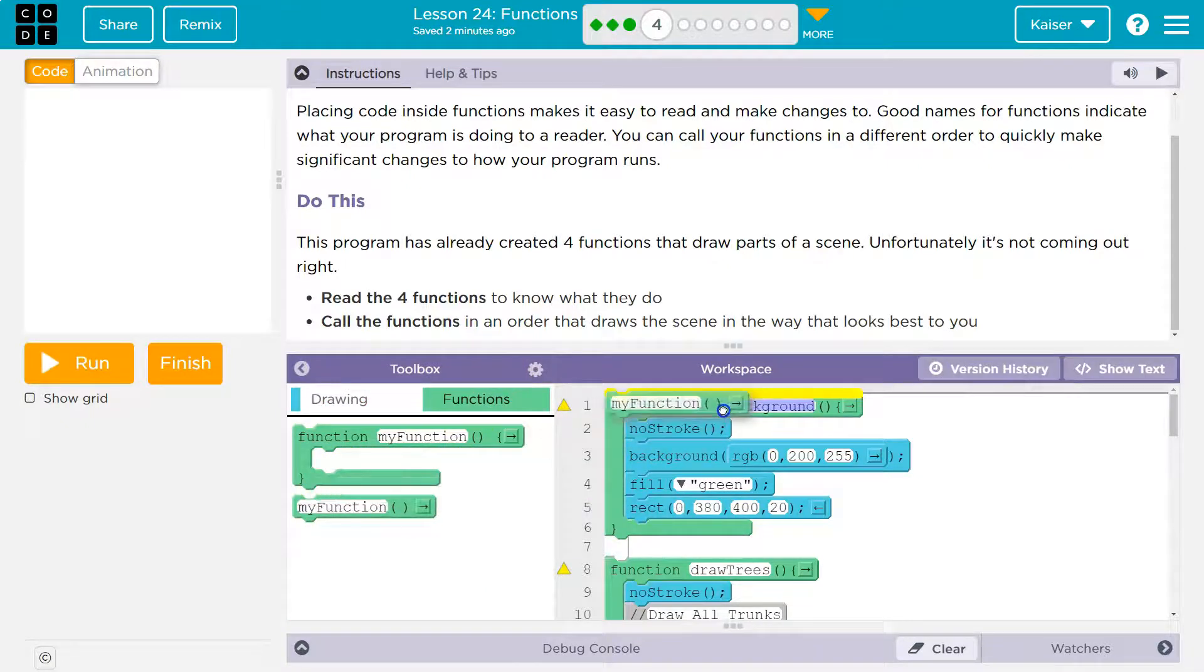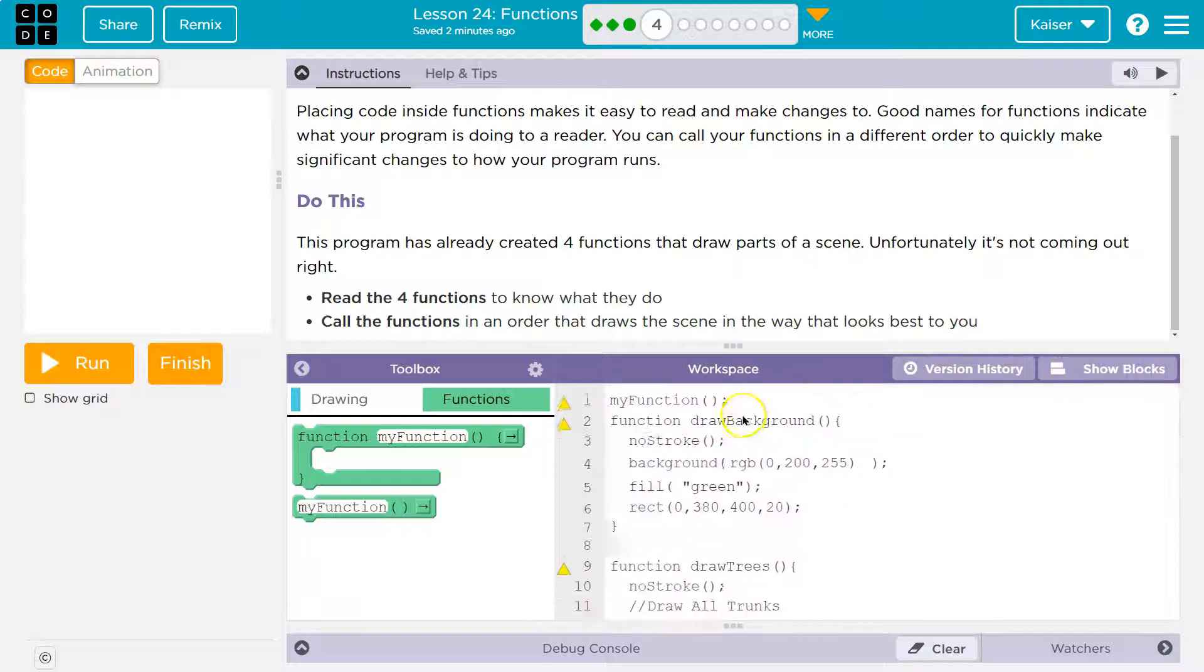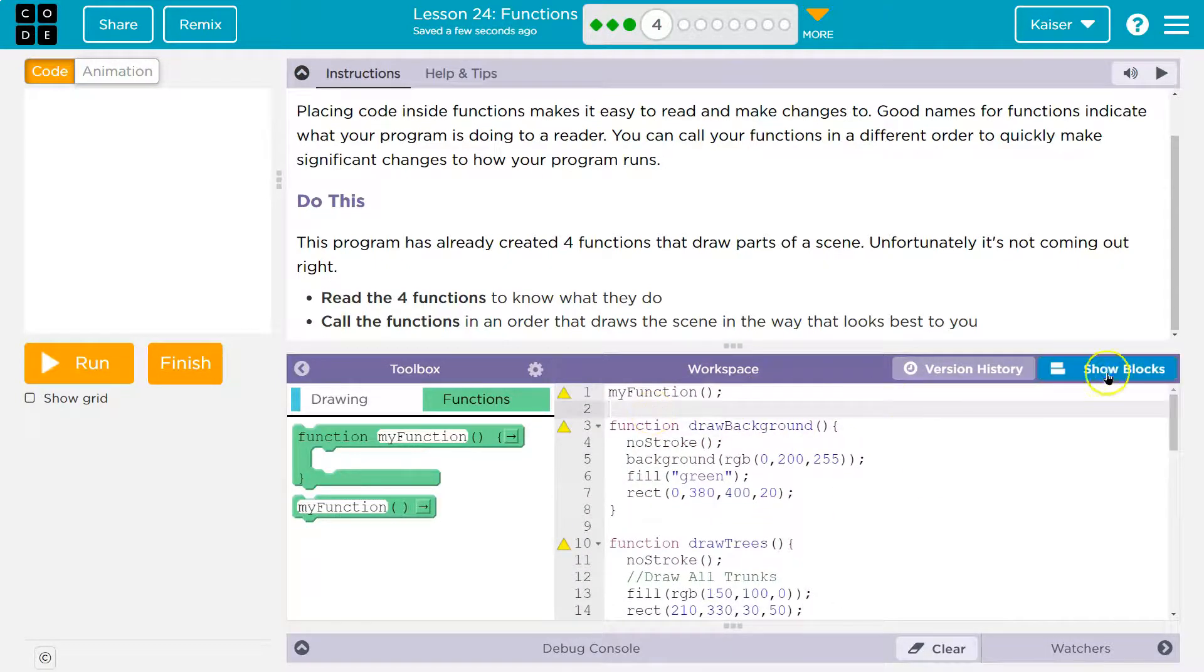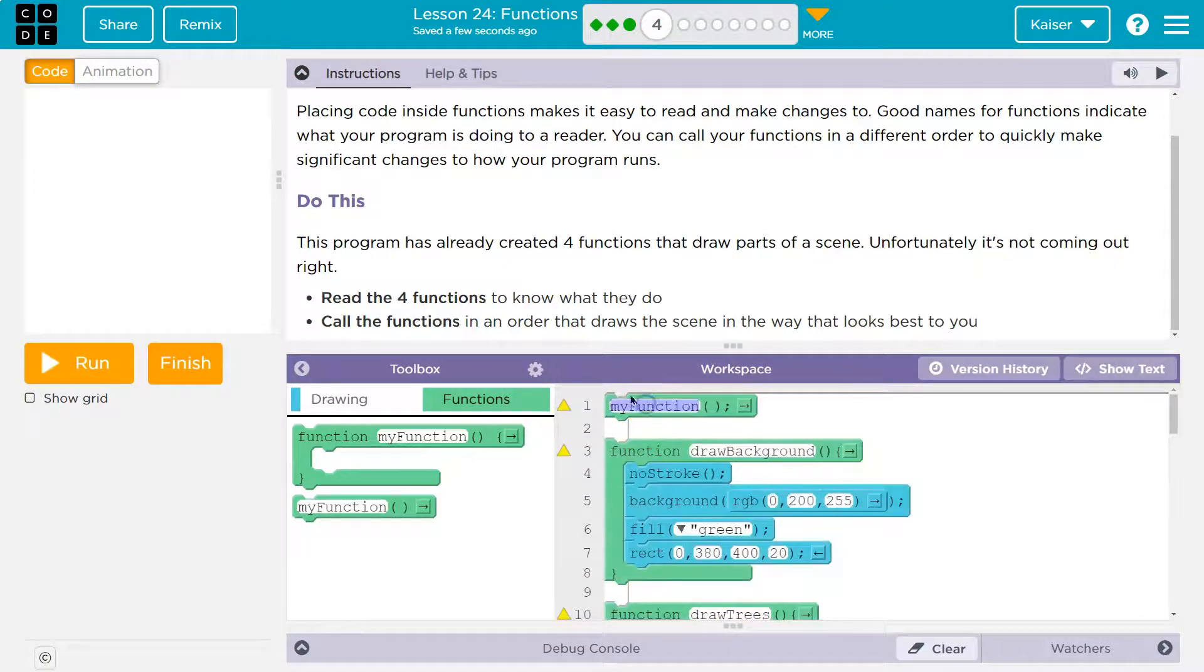So to do that, I'm going to click functions and just drag out our function. I just want to make sure I'm clear here that this is separate. This space doesn't matter. You don't need it, and I'm going to first do draw background because that would make sense to me, and I'm going to test it.